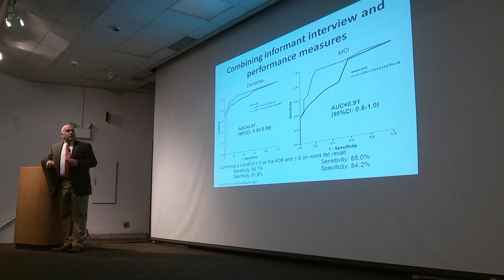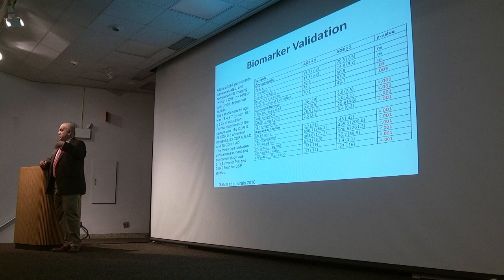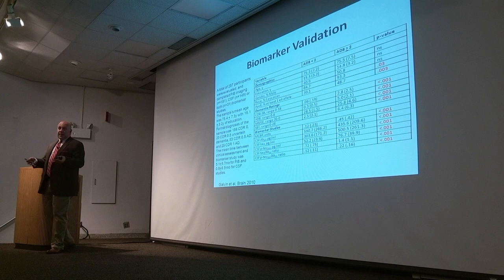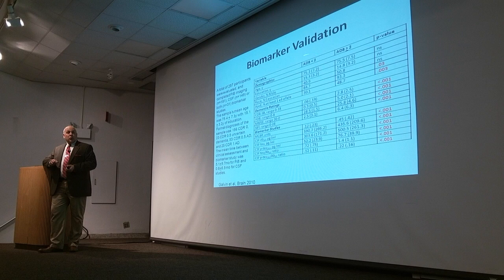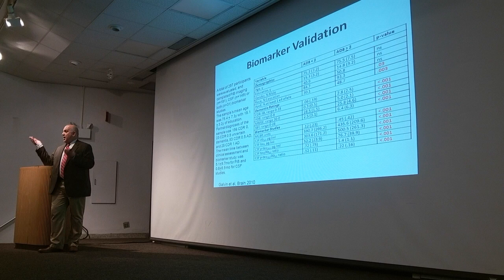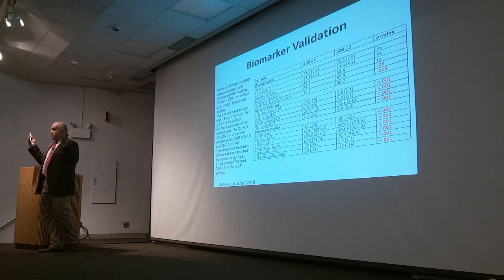We also wanted to demonstrate whether these changes correspond to biomarkers — if our test says someone likely has Alzheimer's disease, do they actually have it? We looked at both amyloid imaging and CSF biomarkers. If your AD8 score was less than two, biomarkers were all in the normal range. If your AD8 score was two or greater, they were all in the Alzheimer's range — highly statistically significant differences. People with AD8 scores of three had high CSF tau and phospho-tau, low CSF amyloid beta, and amyloid deposition on PET scans.